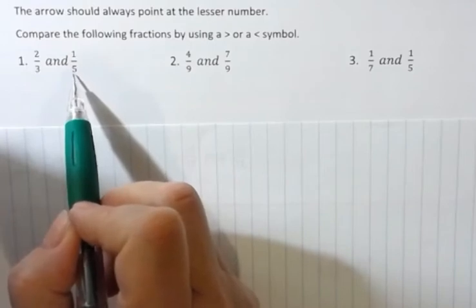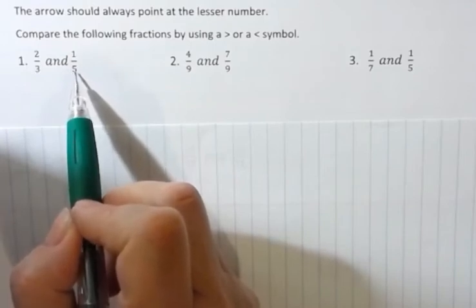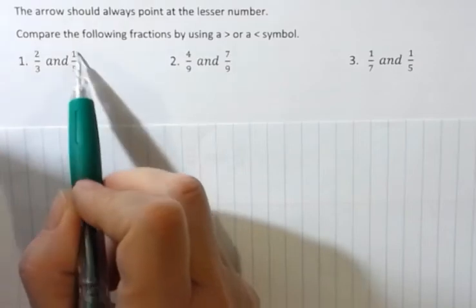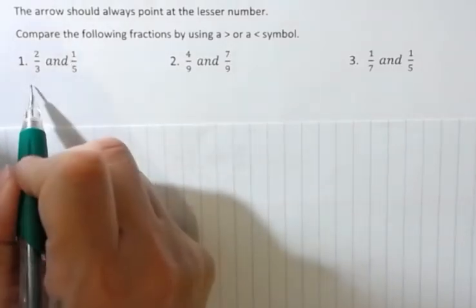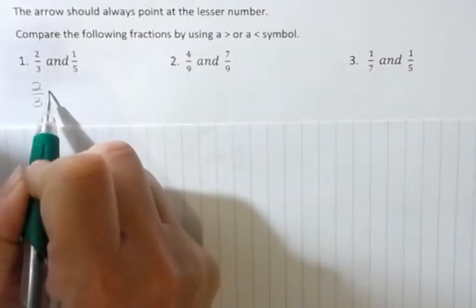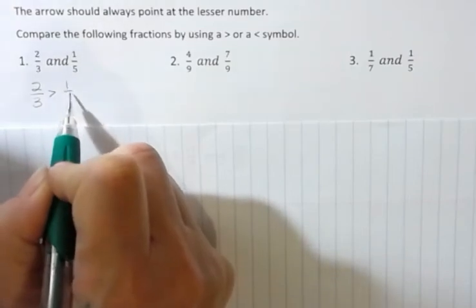This fraction is less than a half because half of five would be two and a half, and we have way less than that. So I can see that two-thirds must be the greater fraction over one-fifth.